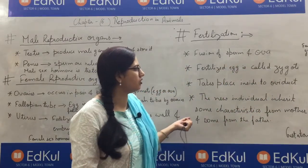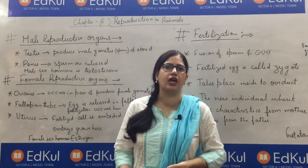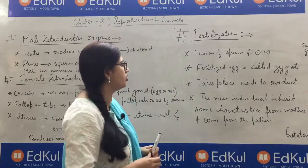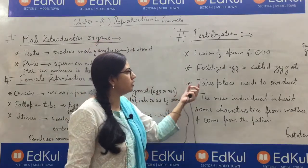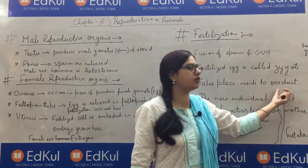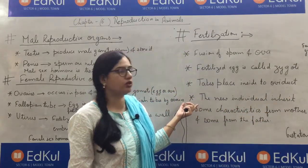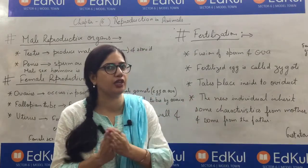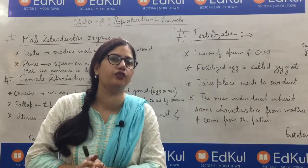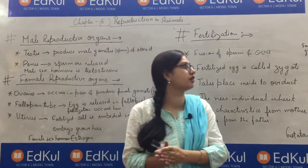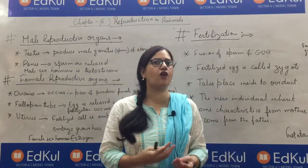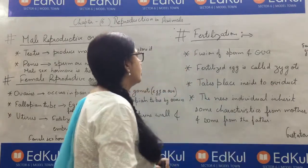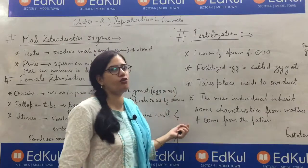The zygote then goes into the uterus and stays there for the next 9 months — that period is known as the gestation period. The new individual formed will inherit a few characters from the mother and a few from the father, because half the chromosomes are from the mother and half from the father. This is the whole process of fertilization.